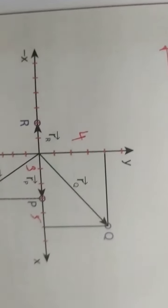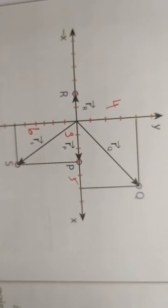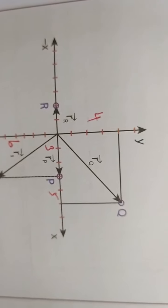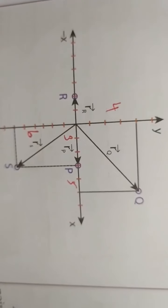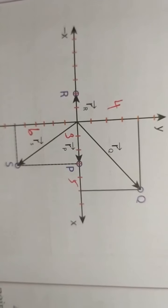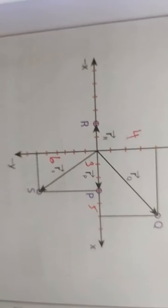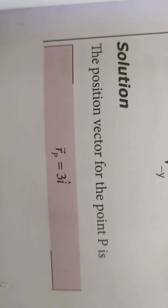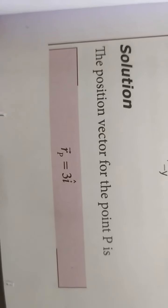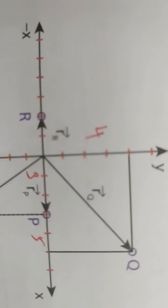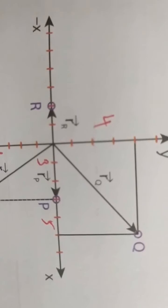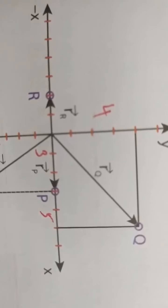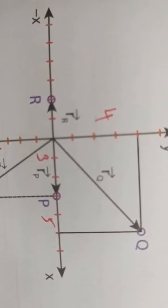When you see this example you can understand easily. There is a graph with 4 positions P, Q, R and S, and we can find out the position of these particles. For particle P, rP vector is equal to 3 i-cap. You can see 3 divisions on the x-axis, and since it is on the x-axis, no need to write j-cap and k-cap.